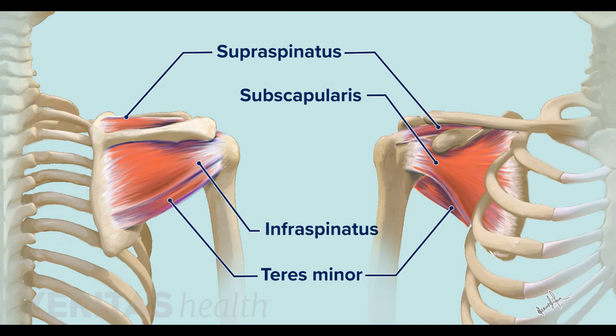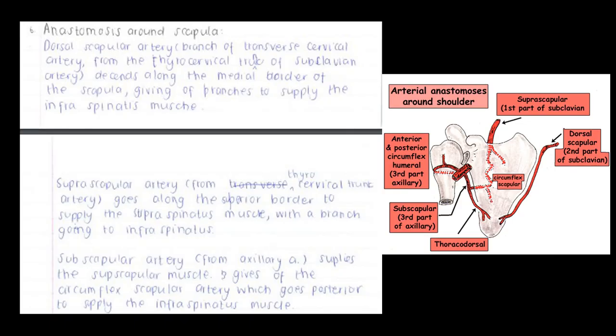To determine where the axillary nerve would be damaged, you need to look at the pathway of the axillary nerve — knowing its pathway tells you where it is most vulnerable. This also leads into understanding the anastomosis around the scapula and the boundaries and contents of your triangular and quadrangular spaces.